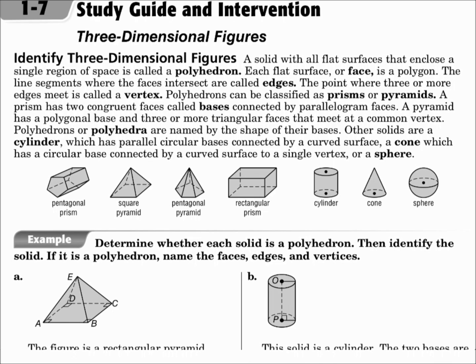Polyhedrons or polyhedra are named by the shape of their bases. Other solids are a cylinder, which looks like a can, a cone, which is like an ice cream cone, or a sphere, which is like a ball.